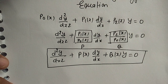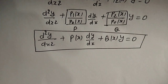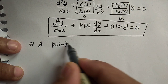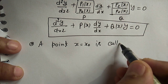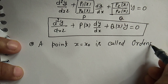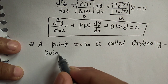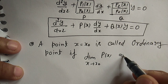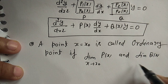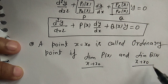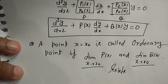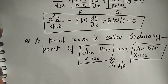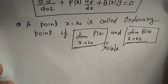For any given differential equation we first try to put it in standard form. Now we will see what is an ordinary point. A point x = x₀ is called an ordinary point if the limit of P(x) as x tends to x₀ and the limit of Q(x) as x tends to x₀ both exist. If both these limits exist, we say x₀ is an ordinary point; otherwise it is a singular point.